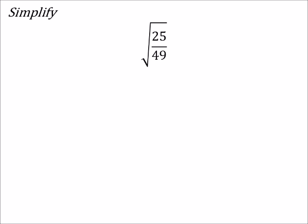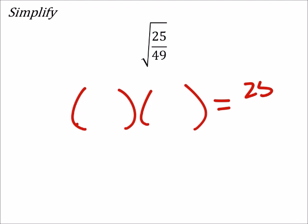So we need the square root... I'm sorry, let me take that back. We need two things. We need to multiply two of the same things so that we're going to get 25 over 49, right?